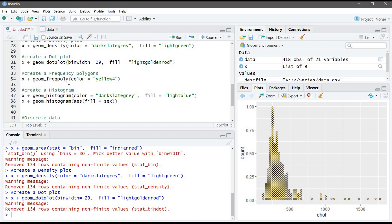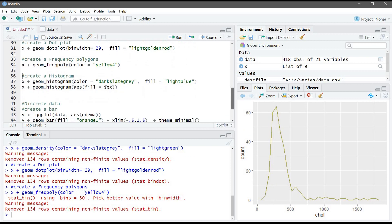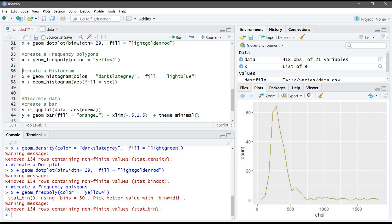And frequency polygons - similarly we will just change the color, but we are going to use the geom_freqpoly function. And lastly is the histogram. In the histogram we are going to use color for the lines and fill will be light blue.